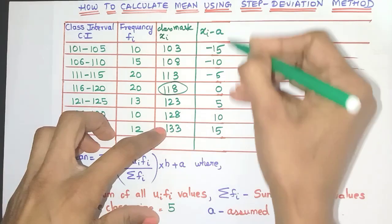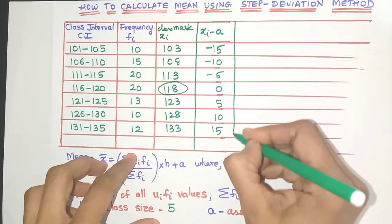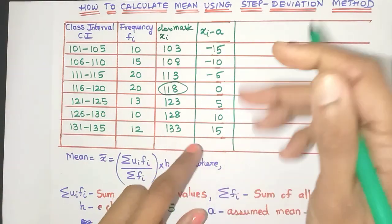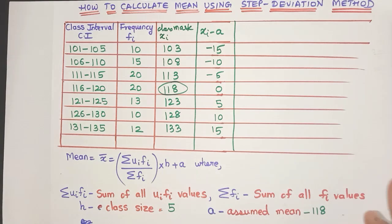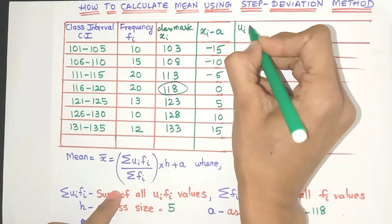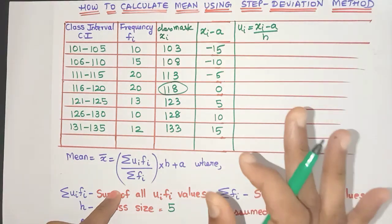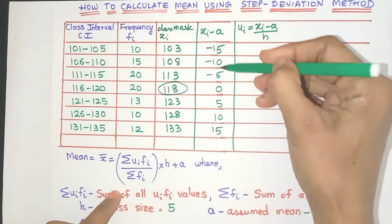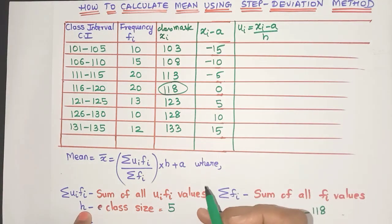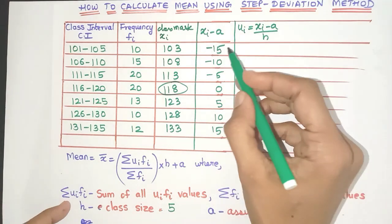Now once this column is over, we further simplify these numbers, friends. The next column is ui. Now what is ui? It is xi minus a divided by h. So what are we doing? We are just going to divide all these numbers by the class size h.